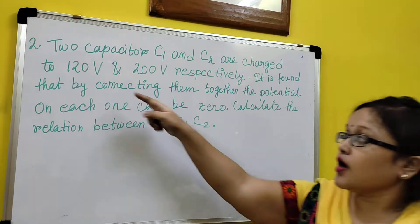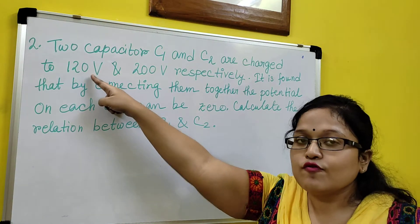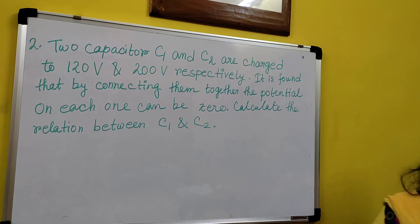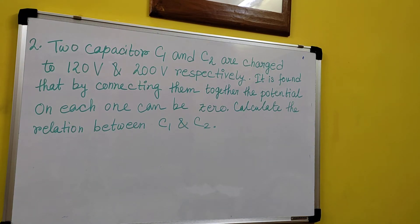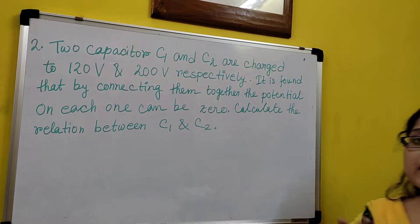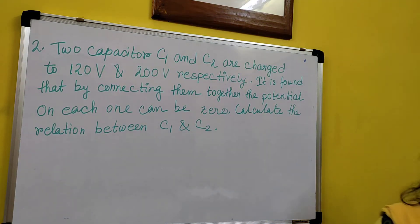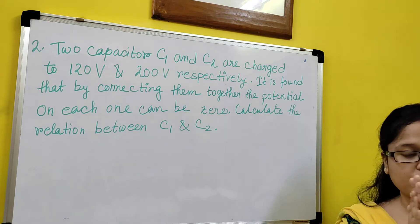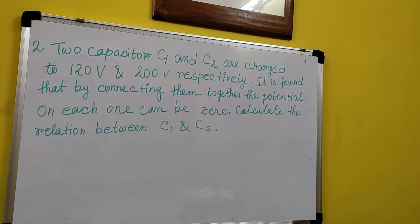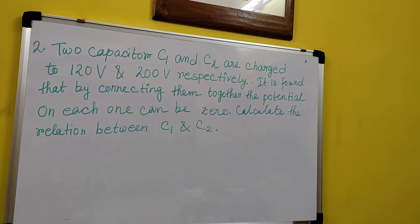One capacitor is connected to 120 volt and another to 200 volt. There is only one condition when the voltage after connection becomes 0 — if they are connected in opposite polarity. Basically, one terminal completes and then the other terminal of the capacitors starts, with the positive terminal connected to the negative terminal and the negative terminal connected to the positive terminal of the capacitors.